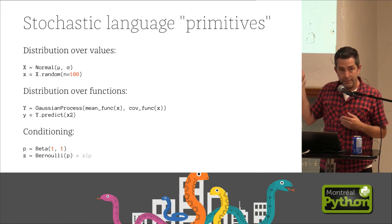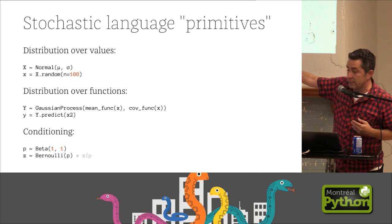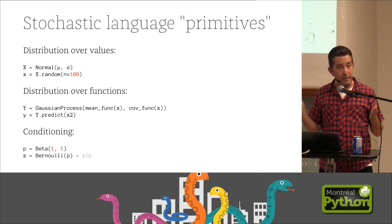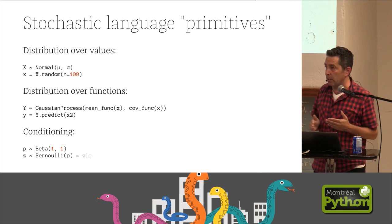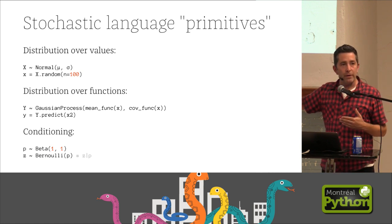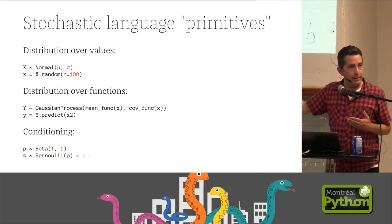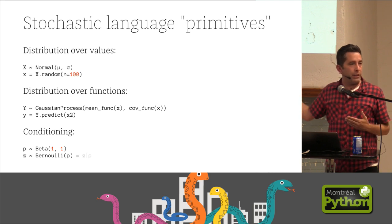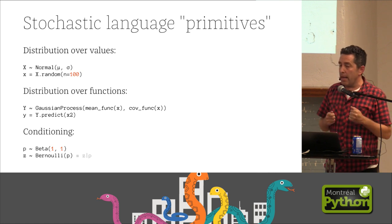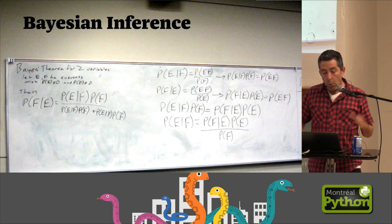But an important thing that it allows you to do is to condition random quantities on one another. So if you define a quantity p, like a probability, as a beta distribution, then you can take another random stochastic primitive and condition its value on the value of that. So Z is a 0, 1 based on that probability p. That's the important thing, it allows you to condition things and really have building blocks to let you build more complicated things.